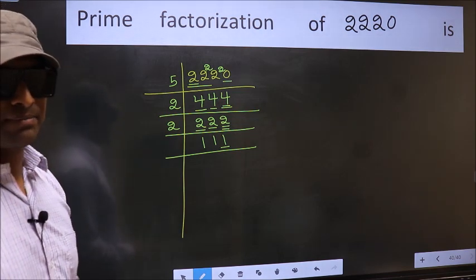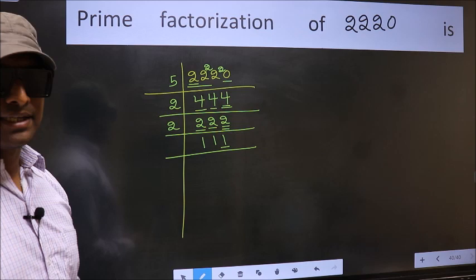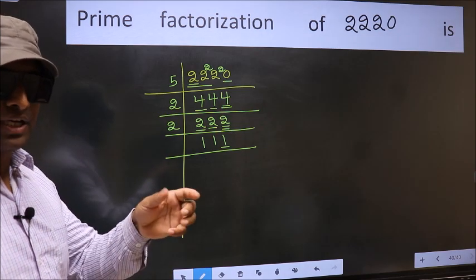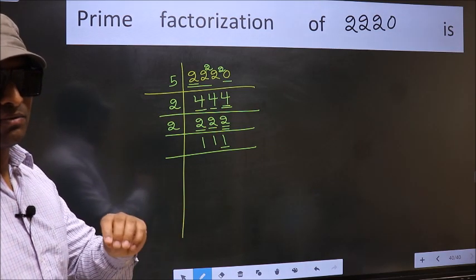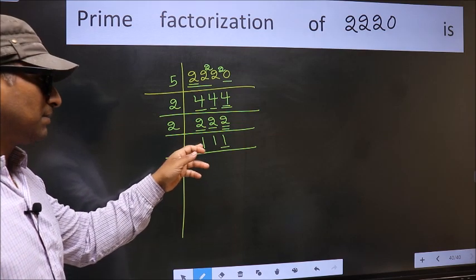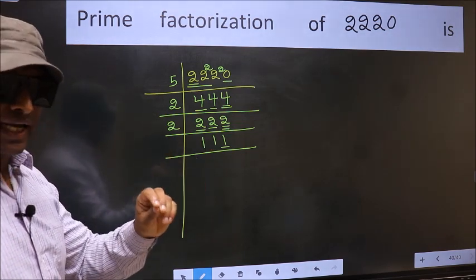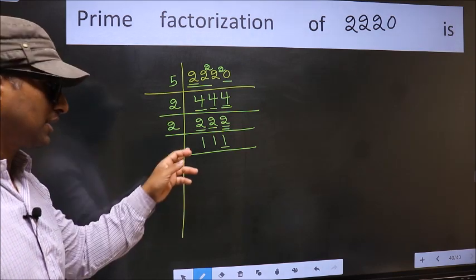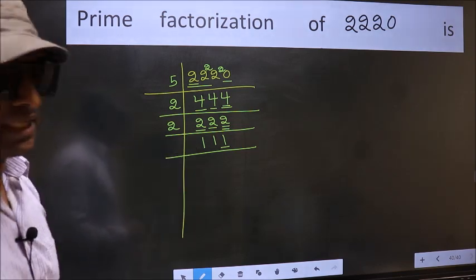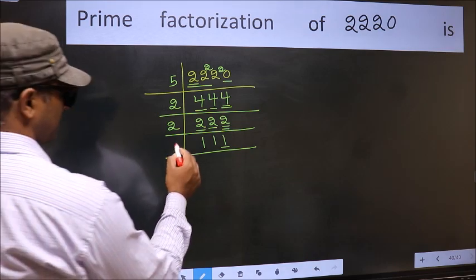Next prime number 3. To check divisibility by 3, we should add the digits. What I mean is 1 plus 1 plus 1 plus 1. We get 3. And 3 is divisible by 3, so this number also divisible by 3. So take 3 here.